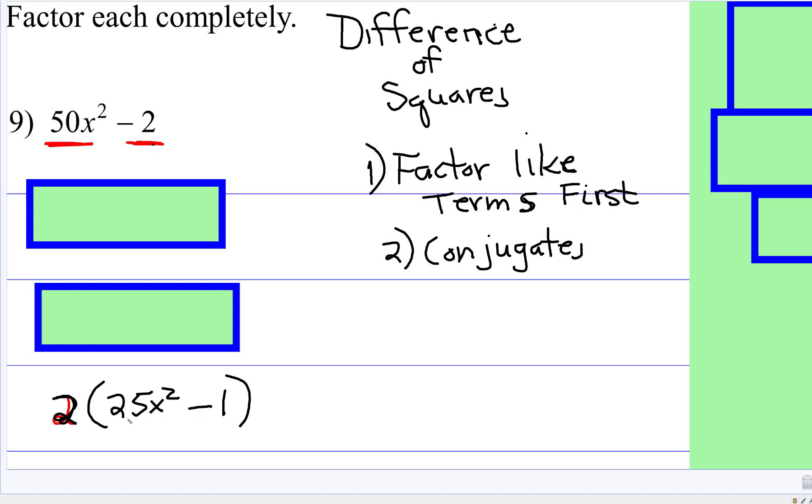And now look at what you have, 25x² is a perfect square, one is a perfect square. And then go ahead and factor.